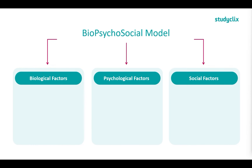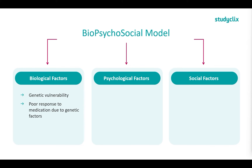Starting off with our biological factors, we have genetic vulnerability — this is what we talked about before, about things being passed down from our parents through our genes. Another biological factor is poor response to medication due to genetic factors. It's important to note that someone may be poorly responding to medication due to taking it incorrectly; however, that does not fall into biological factors — that falls into a different category. That is why we emphasise 'genetic factors' here.